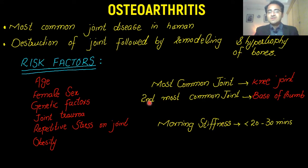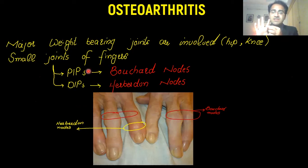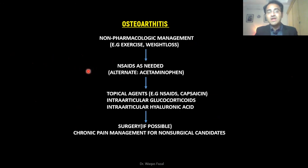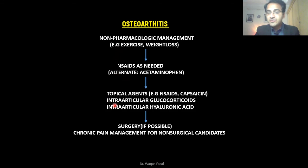In summary, osteoarthritis is a degenerative joint disease. Age is the biggest risk factor. It most commonly involves the knee joint, and morning stiffness lasts less than 20 to 30 minutes. It involves PIPs causing Bouchard nodes and DIPs causing Heberden nodes. In labs, all inflammatory markers are normal. X-ray shows osteophytes and joint destruction. Treatment starts with non-pharmacologic management and exercise, escalating to NSAIDs, topical agents, intra-articular glucocorticoids, hyaluronic acid, and finally surgery or chronic pain management.